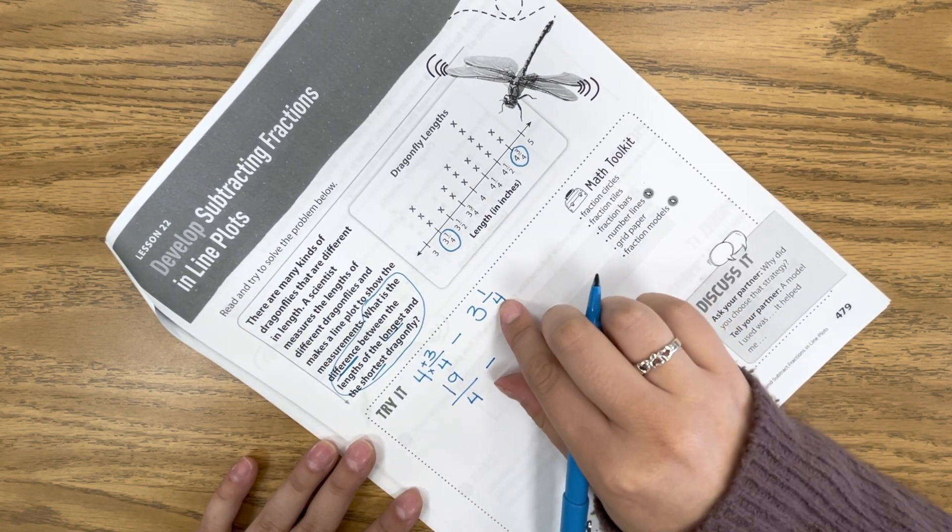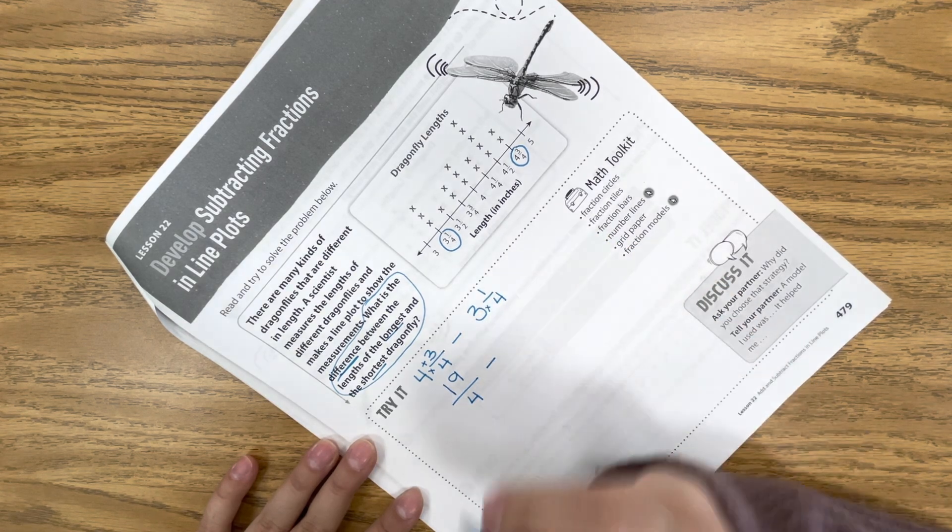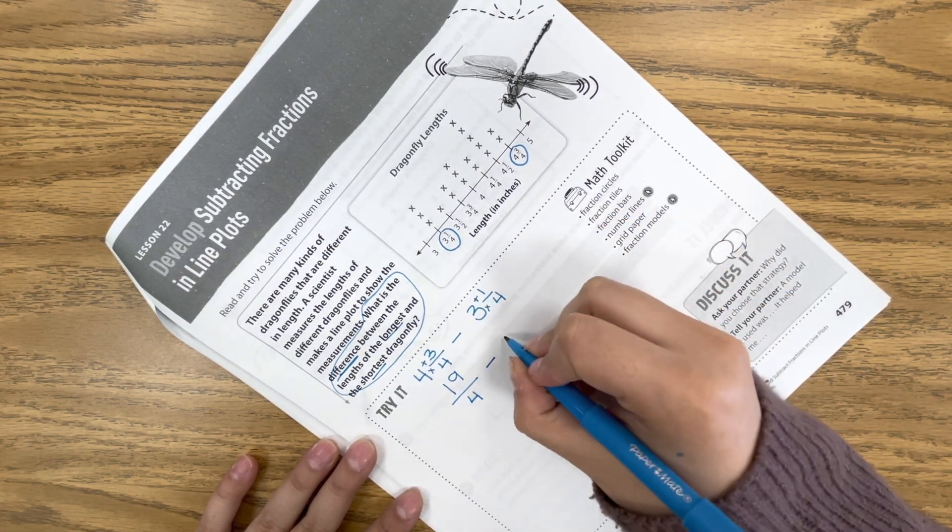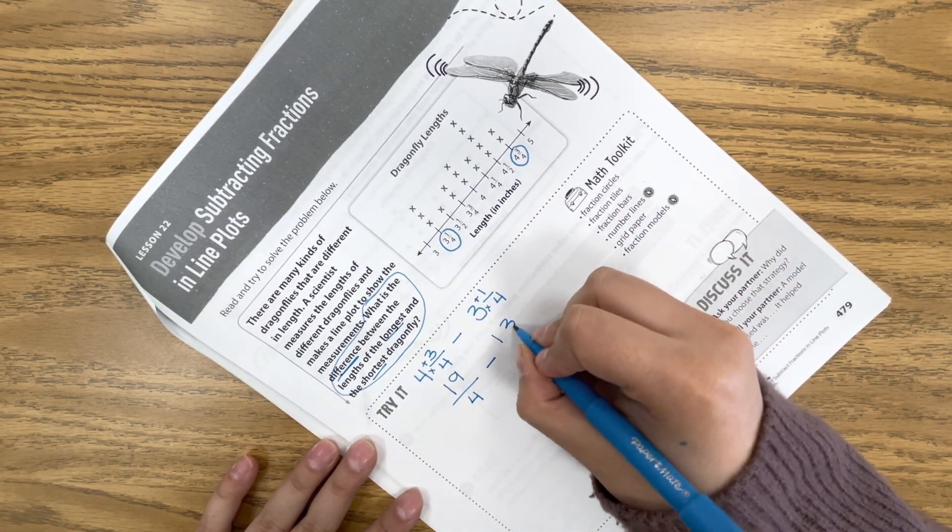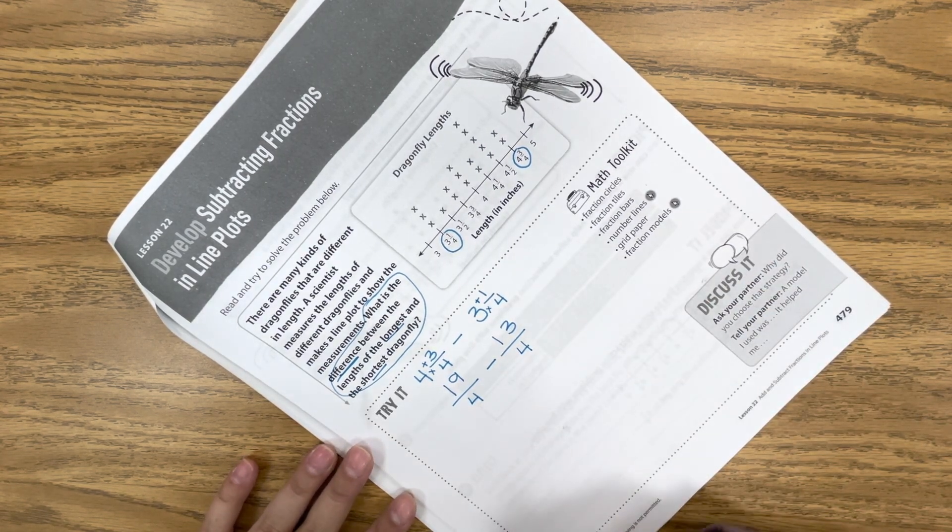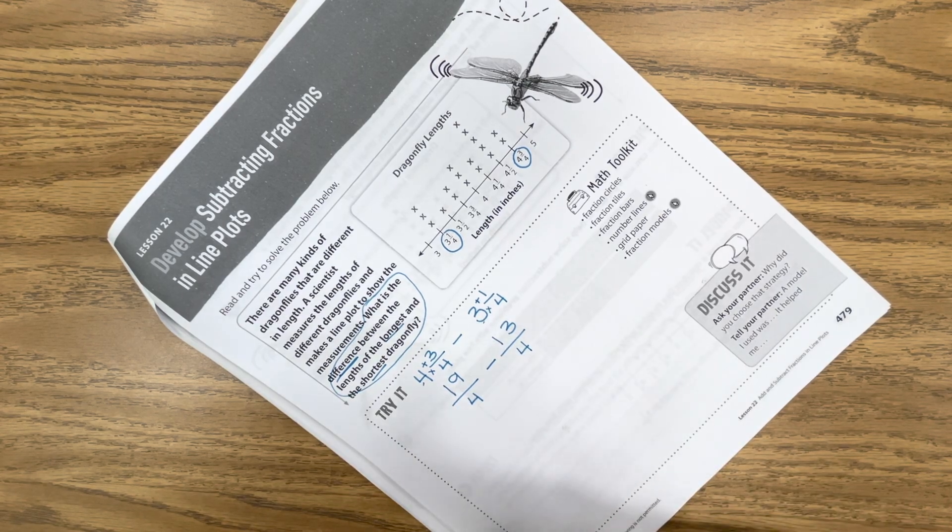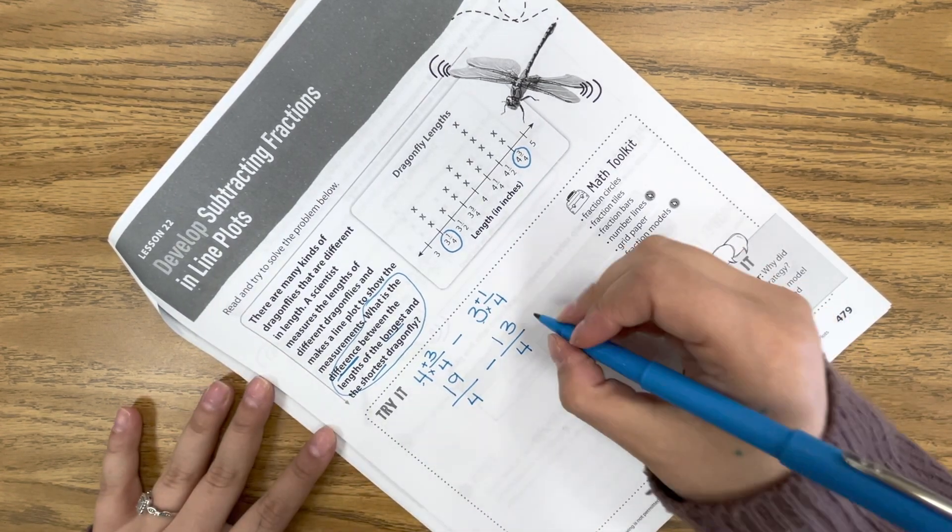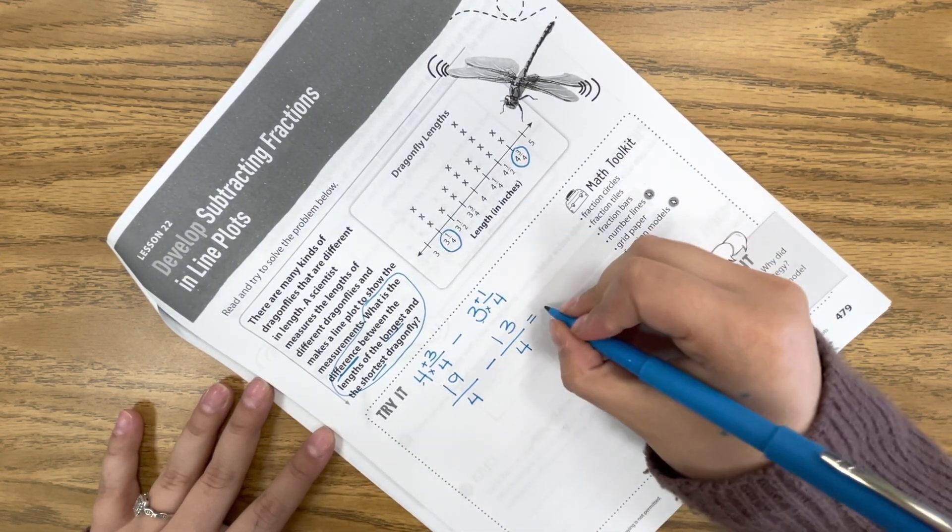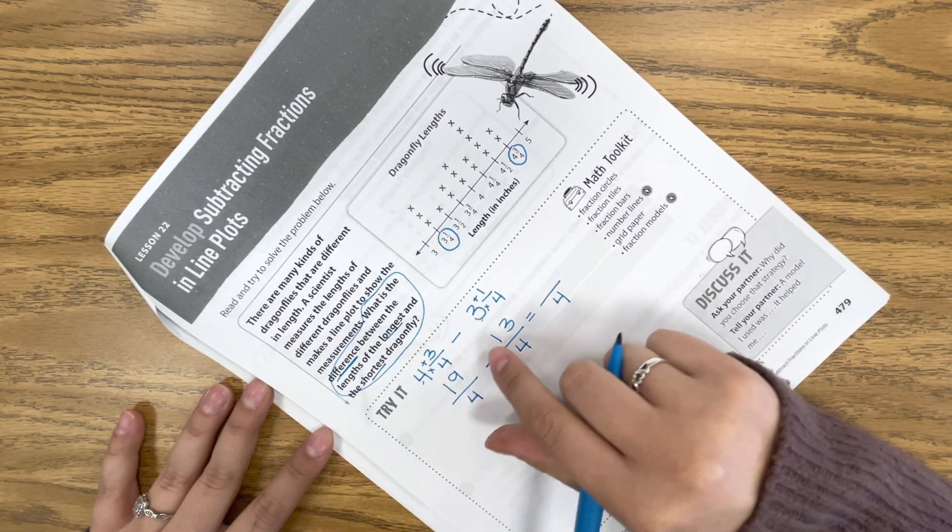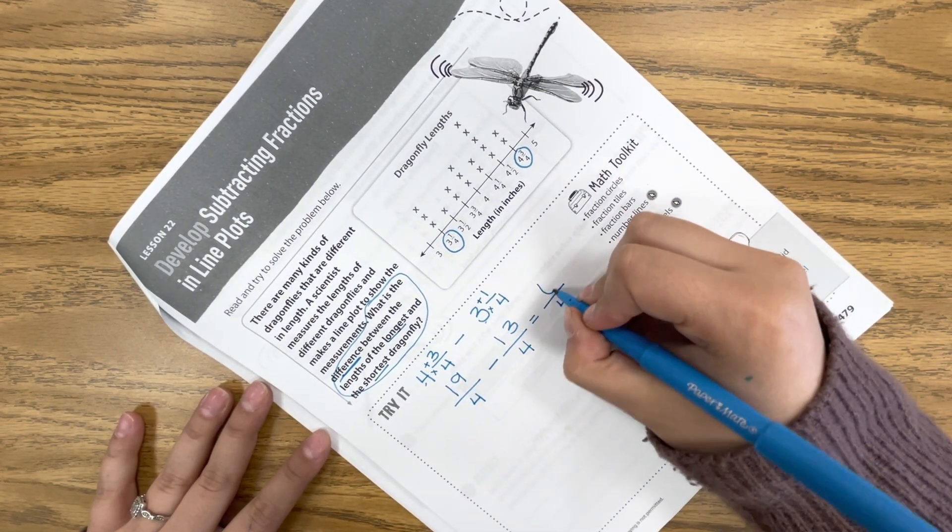And then following the same thing four times three is 12 plus one more is 13 so we have 13 over four. Now this makes it a little bit easier because you don't have to worry about the whole numbers and the fraction and then you just go from here the denominator stays the same and then 19 take away three is six.